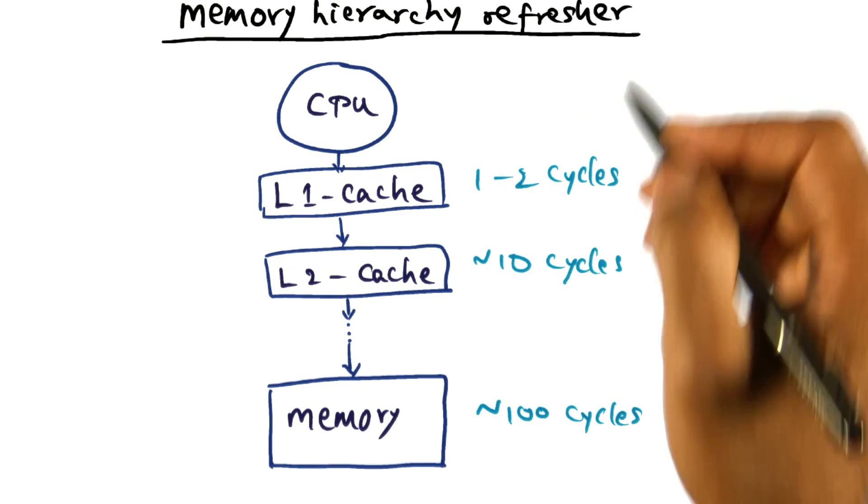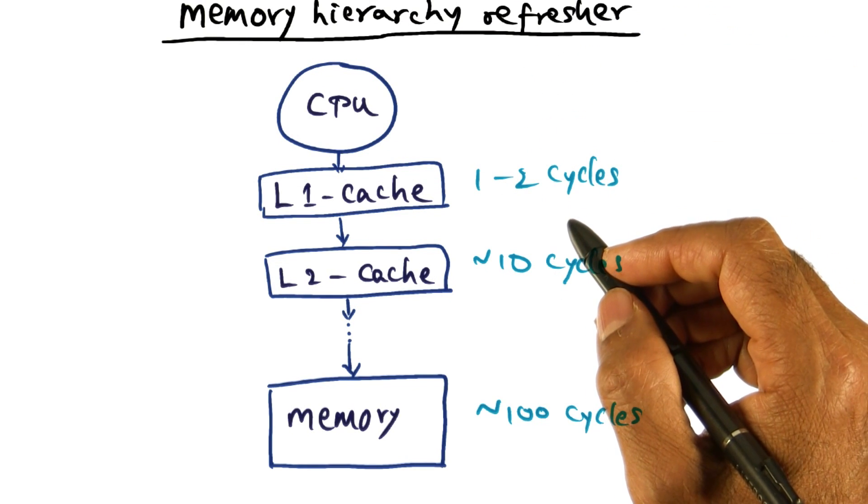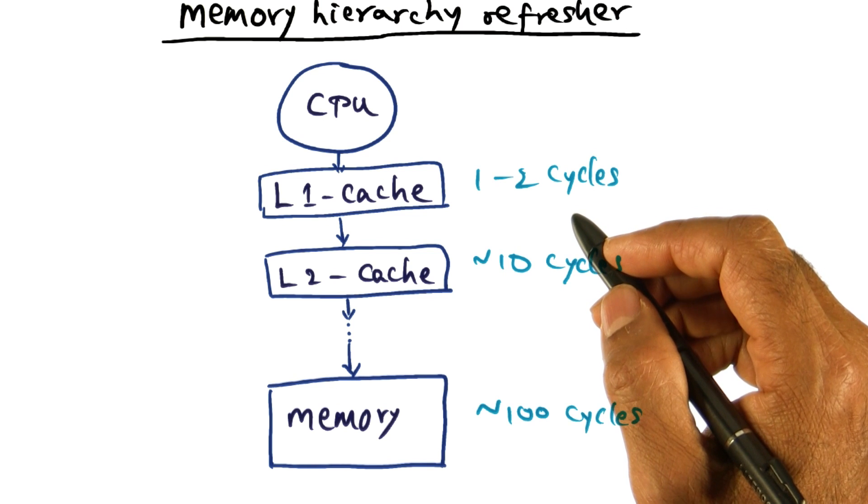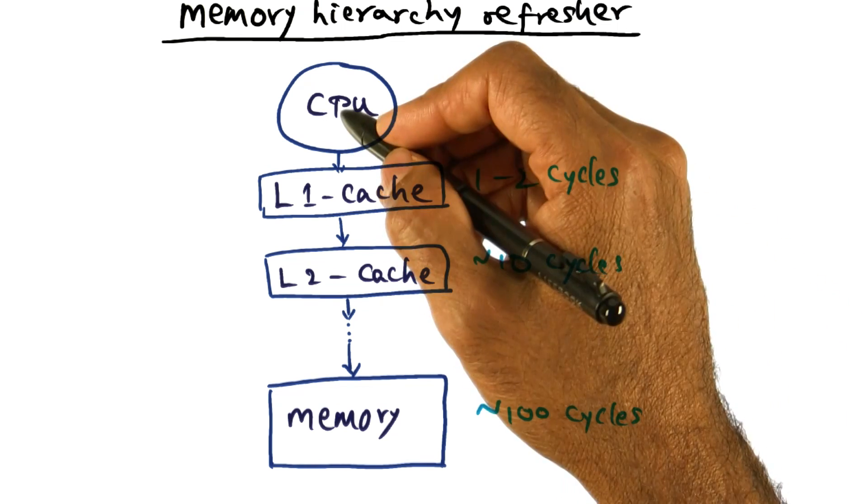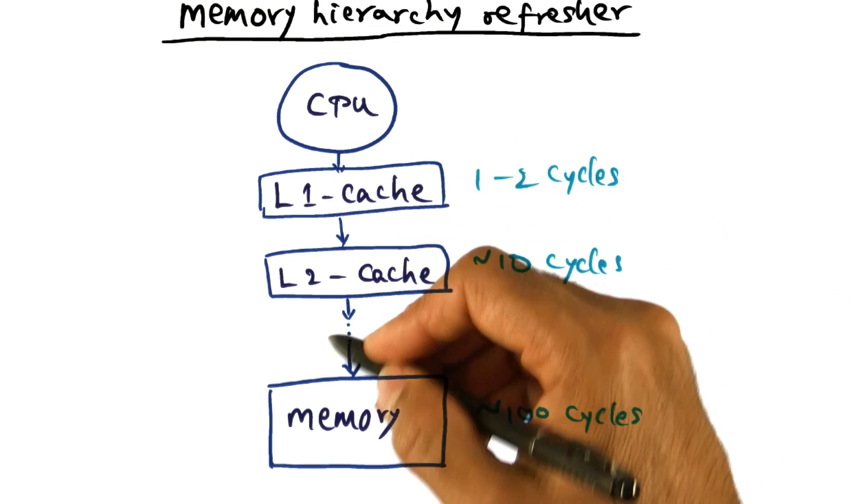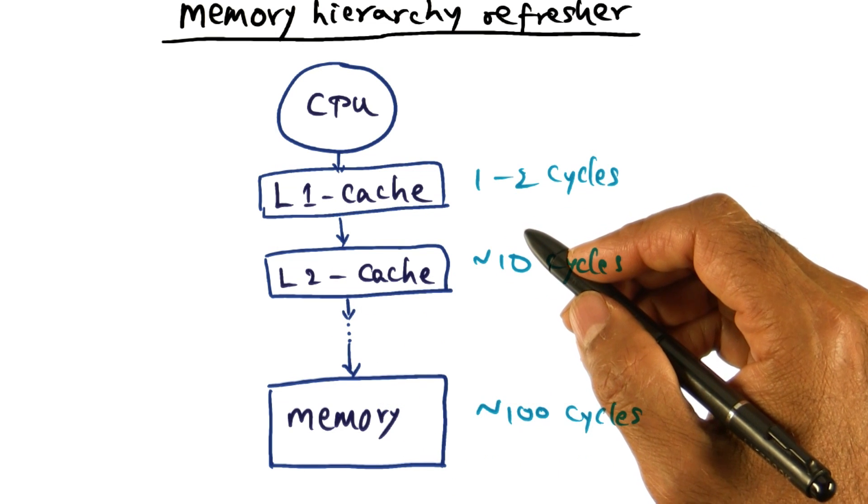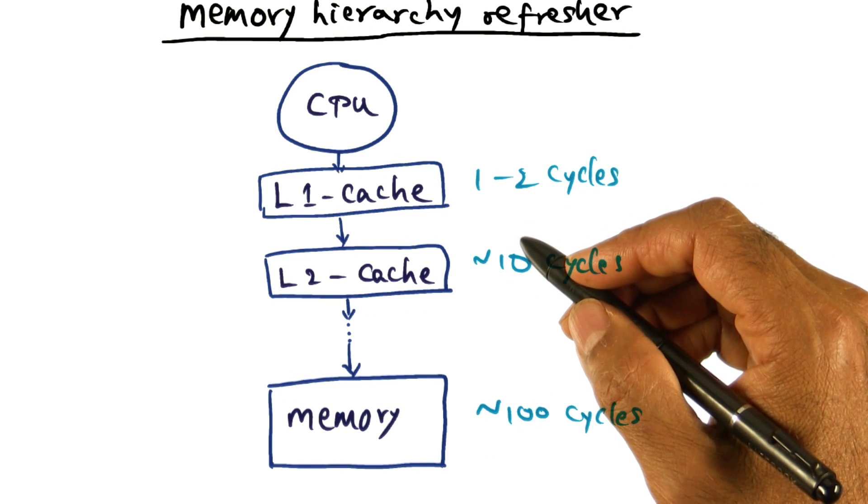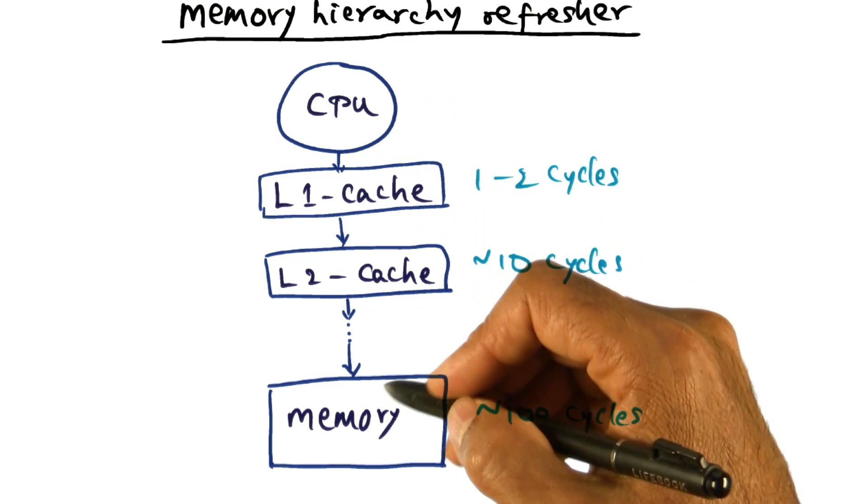Here is a quick refresher on the memory hierarchy of a processor. As you know, between the CPU and the main memory, there are several levels of caches. Typically, these days, you may have up to three levels of caches between the CPU and the memory.